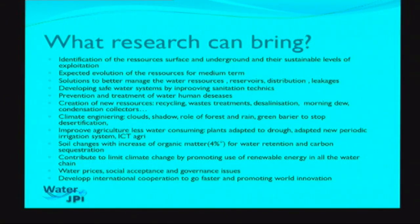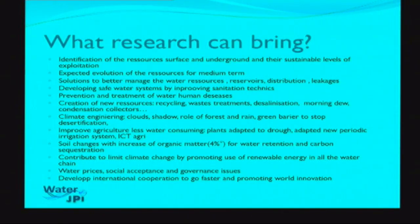On climate engineering, we need to think about the shadow role of forests and rainfall condensation, green barriers to stop desertification, and how to improve agriculture — less water consuming, plants adapted to drought, periodic irrigation systems, and ICT agriculture in relation with FACI — to save water and produce more food. Increasing organic matter in soil sequesters carbon in relation with COP21, and also enables better water retention.